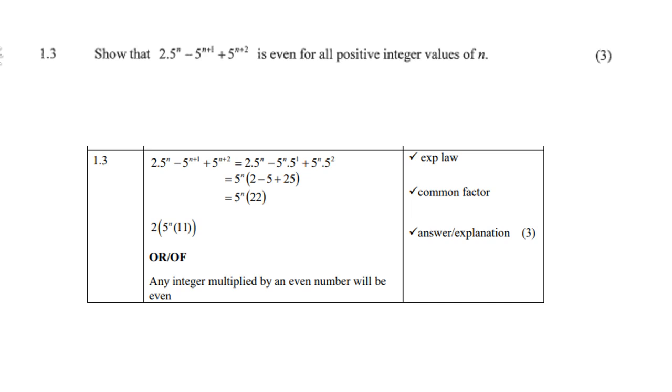Then your common factor is 5^n and you're left with 2 - 5 + 25, which is then 5^n times 22. So there you are, so 2 times—if so you can take out 2 as a common factor, or because 2 times 11 is 22, and that is the explanation that it is even for all positive integers. Or any integer multiplied by an even number will be even. Take note: any integer multiplied by an even number.